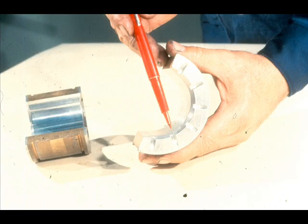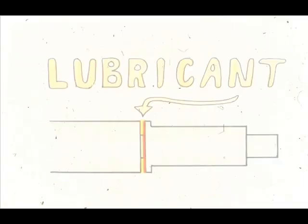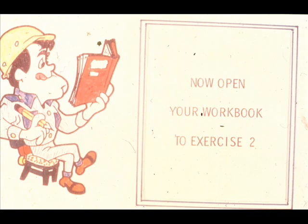Oil grooves in the thrust face distribute the oil across the face of the bearing during operation. As with the basic sleeve bearing, there is a film of lubricant between the shoulder on the bearing and the bearing surface of the rotating assembly. This type of sleeve bearing controls both the radial and axial movement of the shaft. That concludes our examination of the operating principles of sleeve bearings. We have some questions for you now in exercise number two in your workbook.